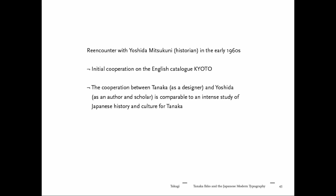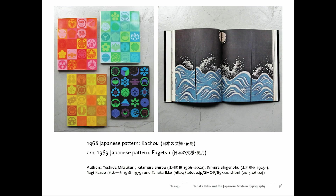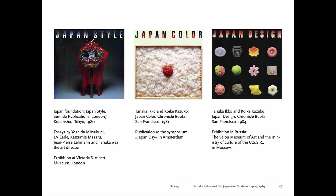He reconnected with his university friend Yoshida Mitsukuni and started working on book series and publications. This series of four books was an iconic point in his life. While other designers were mainly exploring graphic design styles and international trends, Tanaka went back to look into tradition. Together with other scholars, he designed these books — a series mainly focused on a Japanese readership. Later, other books followed, worked on together with curators and editors, but aimed at an international readership.